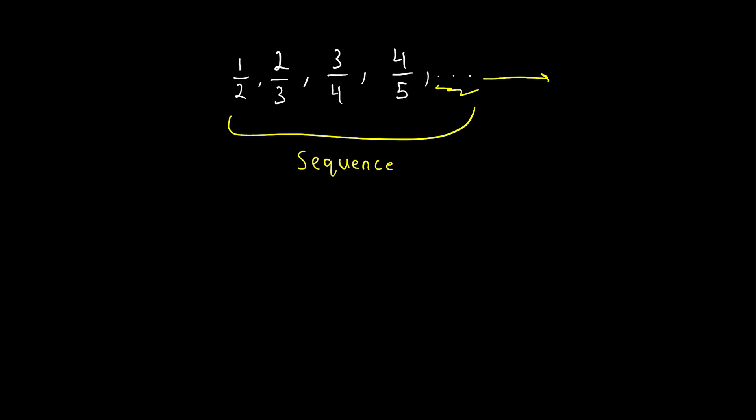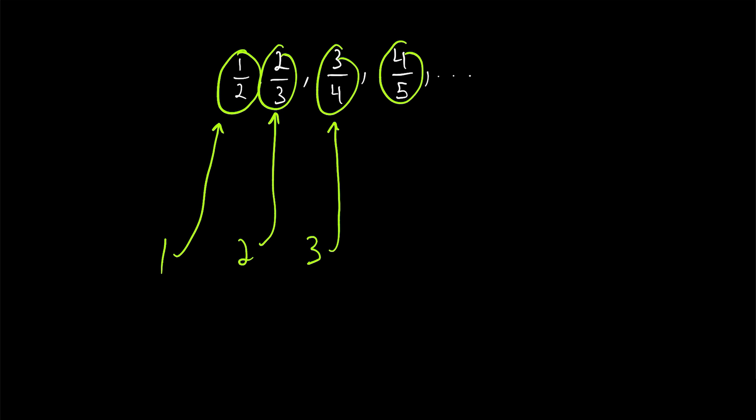indicate that the sequence continues infinitely. A sequence doesn't have to be infinite. Our sequence could stop right here, but we'll mostly be interested in studying infinite sequences. Each number in a sequence is called a term of the sequence. So, for example, one-half is the first term of this sequence, two-thirds is the second term, and so on. In other words, for every term in the sequence, there is a corresponding positive integer that describes that number's position in the sequence. Three-fourths, for example, is the third term in the sequence. Four-fifths is the fourth term, and so on.